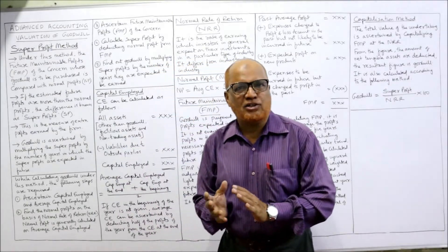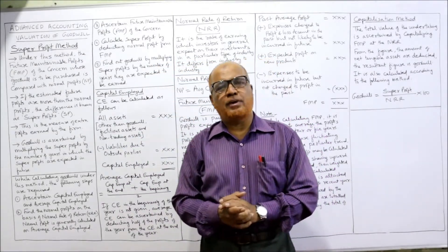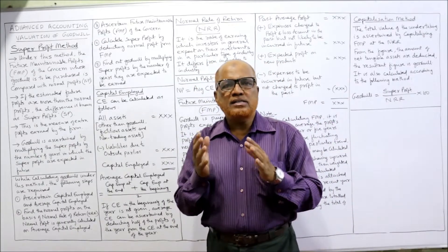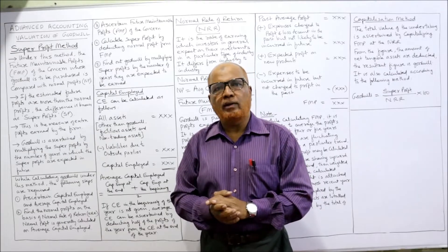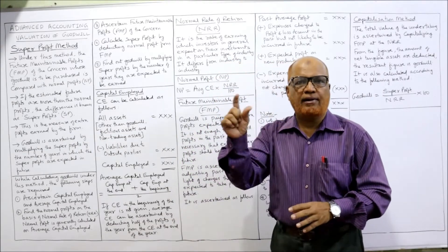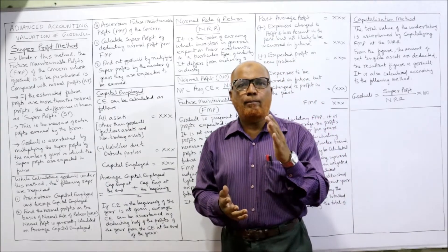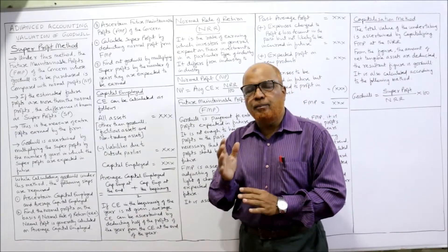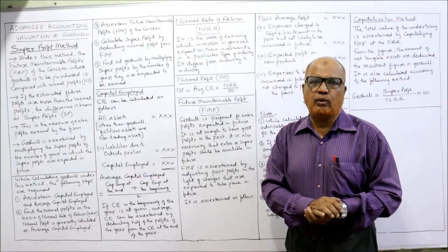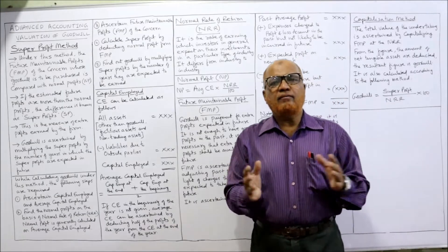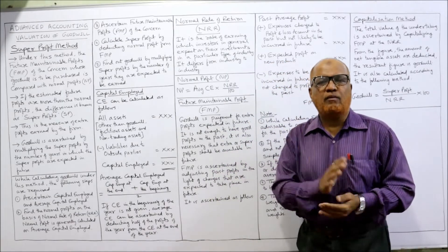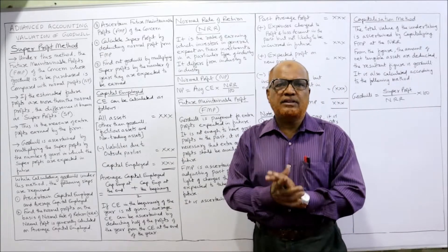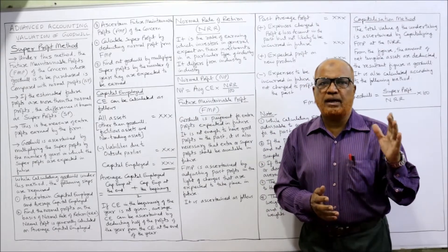Hello viewers, welcome to my channel. I am Hashem Ali Khan. In the last video I explained the meaning and definition of goodwill, features of goodwill, the need for calculating goodwill, factors to be considered, and lastly the methods of calculating goodwill. Now in this video we cover a very important method — the super profit method. Normally we have three methods: average profit method, super profit method, and capitalization method.